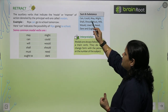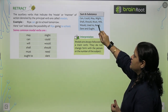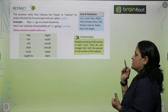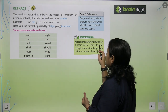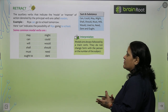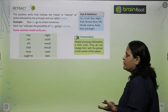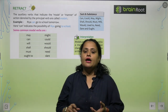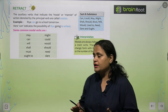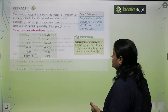So here we will study: can, could, may, might, shall, should, must, will, would, used to, need, dare, and ought. Modals are always followed by a main verb — modals hamesha main verb se follow hoti hain. They do not change with the person or the number of the subject — inpe subject ki number ka ya kisi person ka koi impact nahi padta hai.